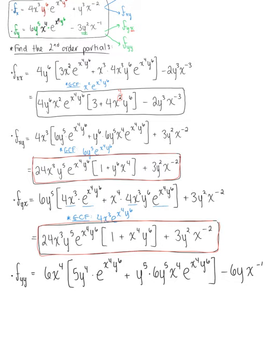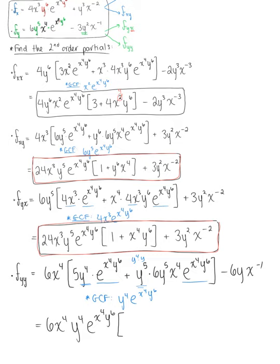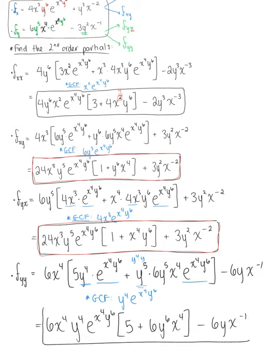Looking within these parentheses, we can see a greatest common factor of y to the fourth times the natural exponential raised to x to the fourth times y to the sixth. The greatest common factor is y to the fourth times the natural exponential raised to x to the fourth times y to the sixth. This becomes 6 times x to the fourth times y to the fourth times the exponential, multiplied by 5 plus 6y to the sixth times x to the fourth, minus 6y times x to the negative one. And that is our last second order partial derivative.